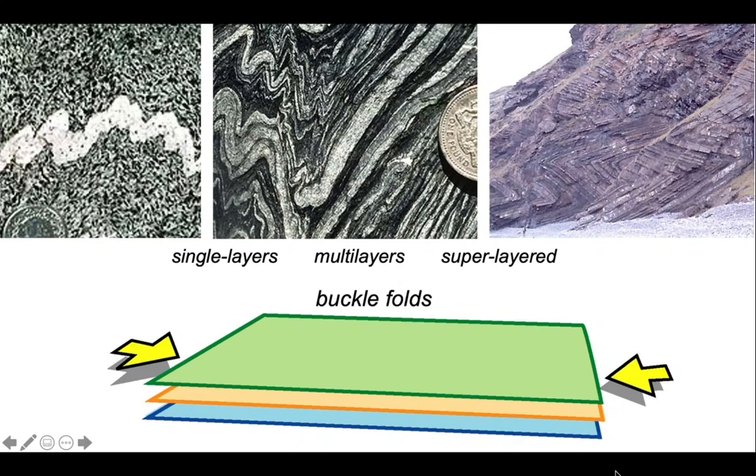Okay, so that's a brief introduction to buckle folds and their evolution. We've looked at them in single layers, in multi-layers, and in these super-layered successions where there's a pronounced layer anisotropy. But it's not the only way in which folding can develop.